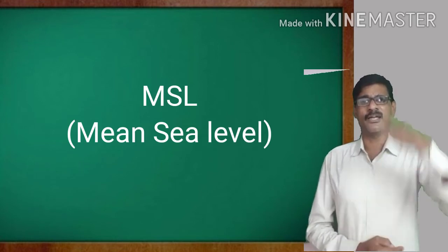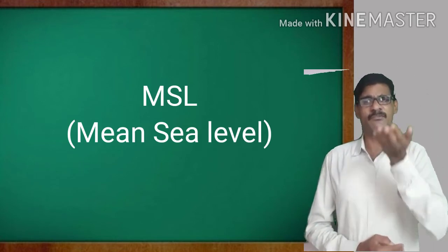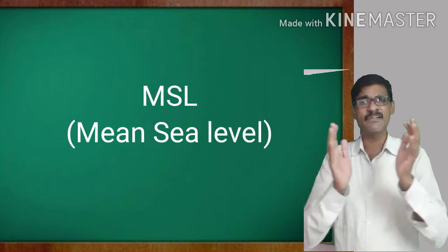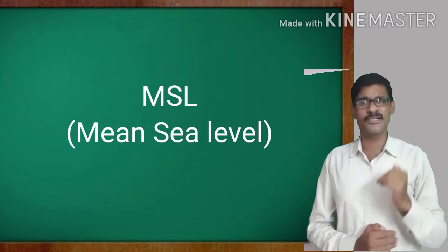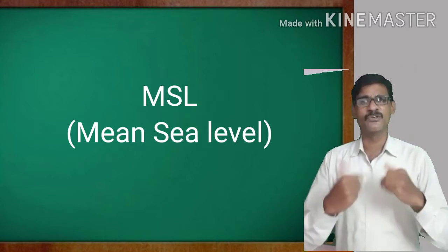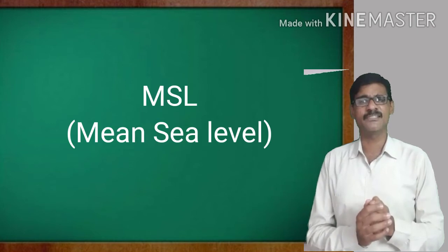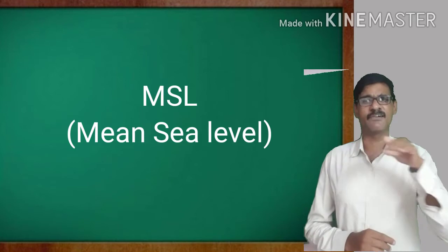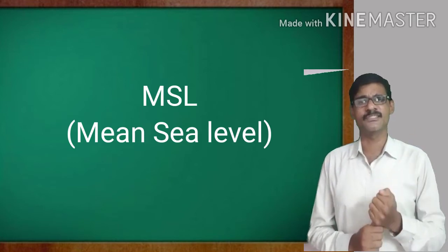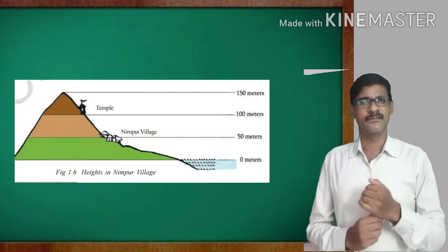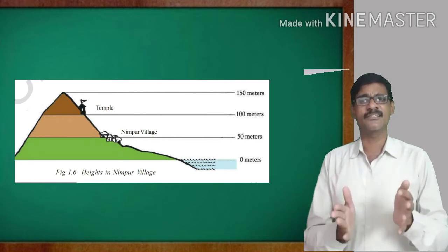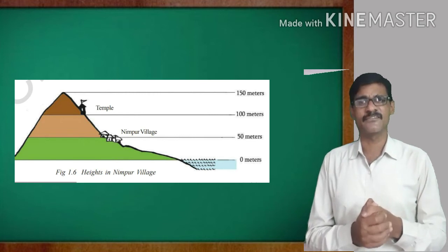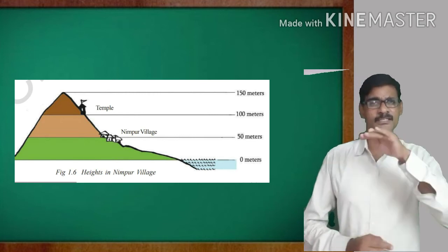How they calculated the mean sea level? Sometimes there are high tides and sometimes we have the low tides. Between the intervals of the high tides and the low tides, the scientists observed the intervals and they calculated the mean average sea level. This is the mean sea level.